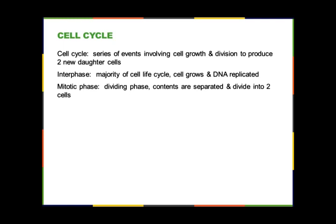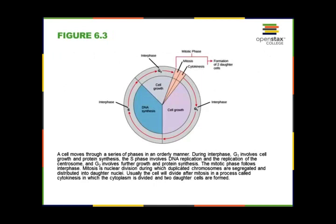Mitosis literally means division of the nucleus. As the cell moves through these phases, this diagram shows that the mitotic phase is just a small portion and interphase is the majority of the cell's life cycle. In the mitotic phase we divide it into mitosis — division of the nucleus — and cytokinesis — division of the cytoplasm. Interphase has three parts: G1, S phase, and G2. During G1 there is a lot of cell growth; during S phase there is DNA synthesis; and in G2 there is more growth.